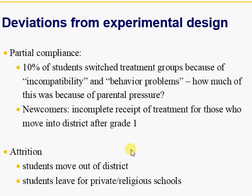Unless a parent forced that their child should go to a small class size for some other reason, the partial compliance — 10% of students who basically switched due to incompatibility and behavior problems — should not affect the results of the experiment. Attrition also occurs as many students may have moved out of or into districts, so there may be some attrition effect as well.